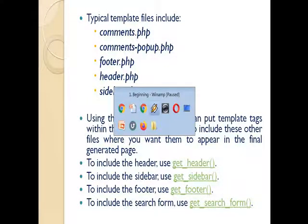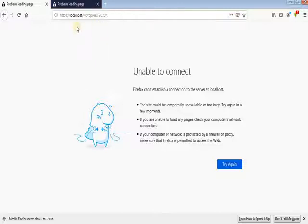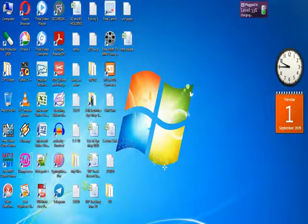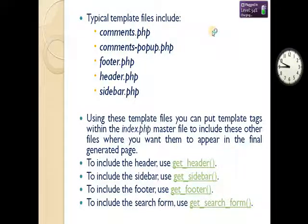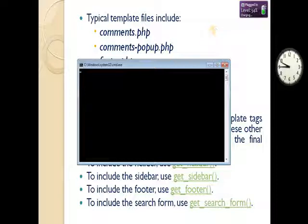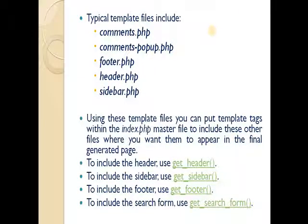For example, if we use WordPress in one page, we can use WordPress functions. To include the header, we use get_header(). For the sidebar, use get_sidebar(). For the footer, use get_footer(). For the search form, use get_search_form().